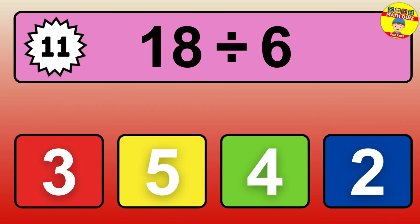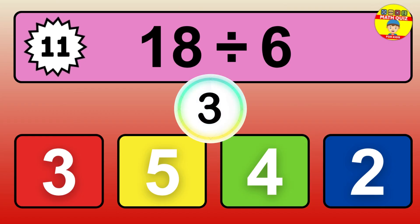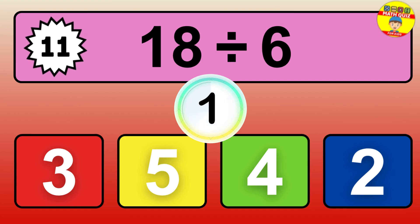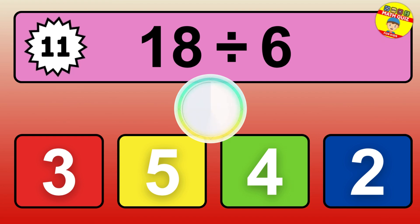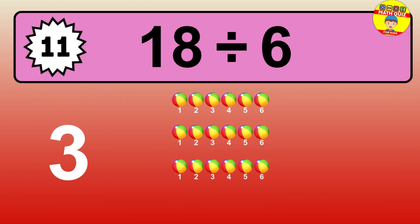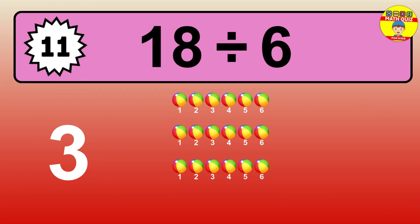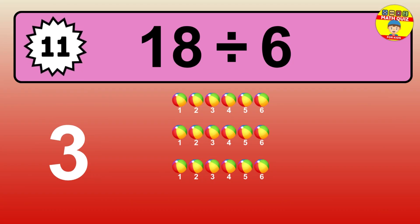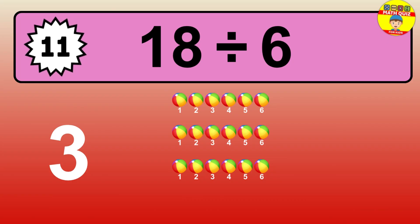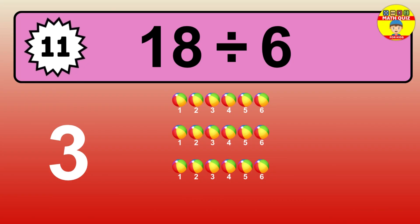24 divided by 8 — time to think. Let's go to the solution. Divide the number 24 by 8. Each group contains 8 units, so dividing 24 by 8 results in 3 equal groups. Thus, the result is 24 divided by 8 equals 3.